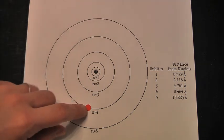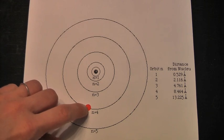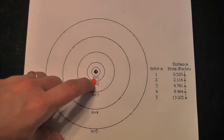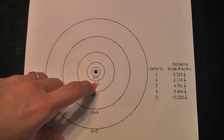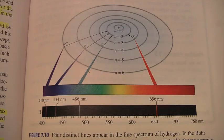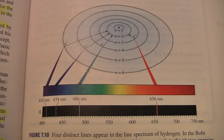Electrons can release energy or emit energy and fall down to a closer orbit. On the other hand, an electron can absorb energy and move to an orbit further away from the nucleus. On page 253 in your textbook, you'll see figure 7.10.